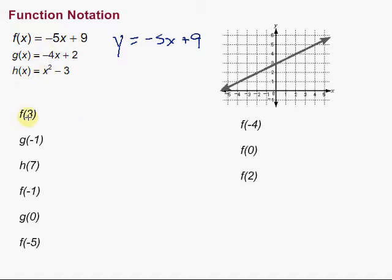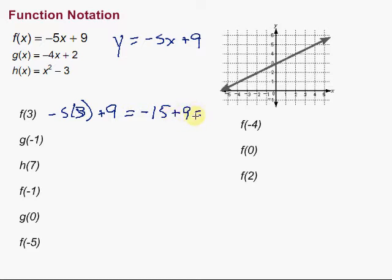So let's say we're given some values and asked to figure out what they are. Here we have f of 3. That means we're looking at the f function and we're asked to put 3 in for x. So we have negative 5 times 3 plus 9. That equals negative 15 plus 9, which is negative 6. So f of 3 equals negative 6.